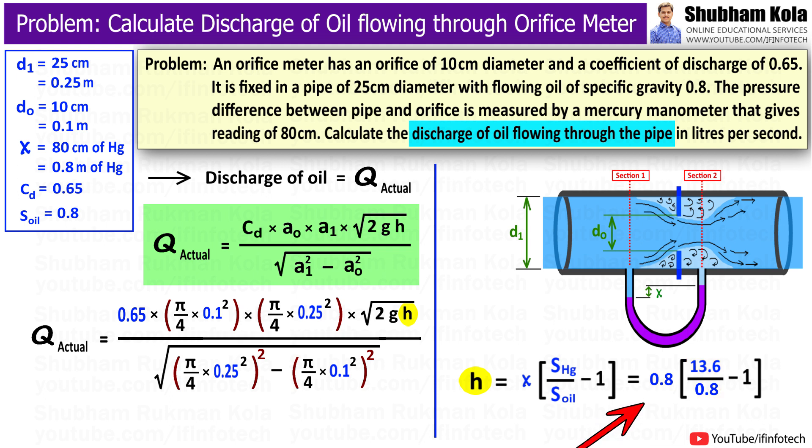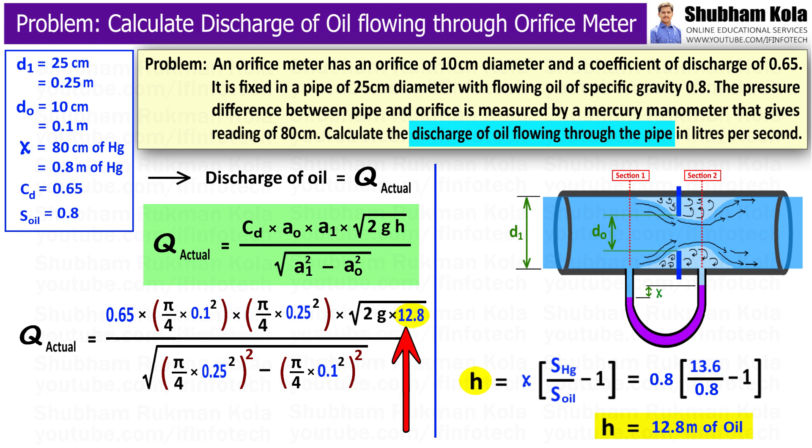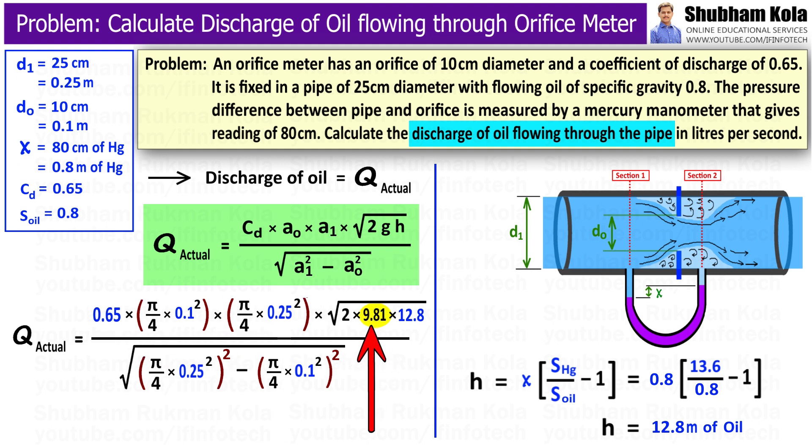By calculating this, we will get h equal to 12.8 meter of oil. Now I will put this calculated value of h in discharge formula, and g is acceleration due to gravity, that is 9.81. So now we have found all the values in discharge formula.